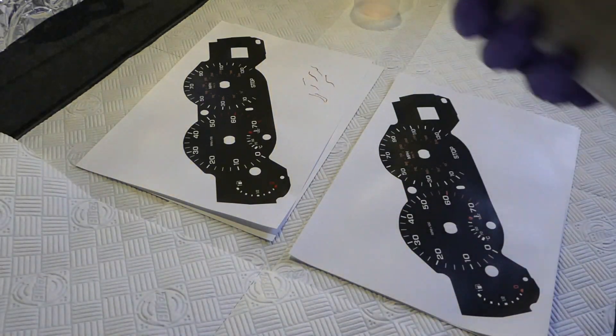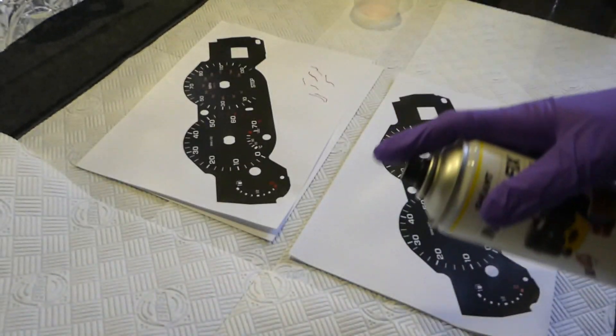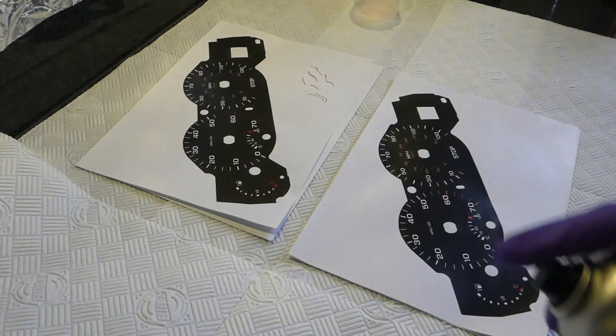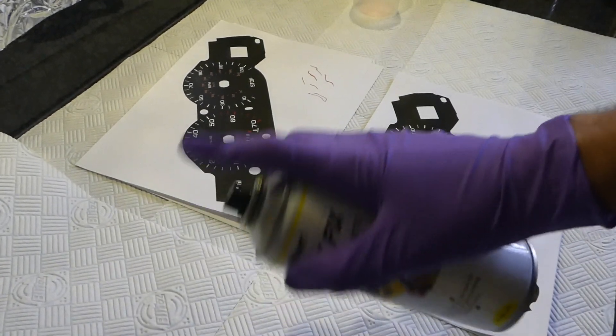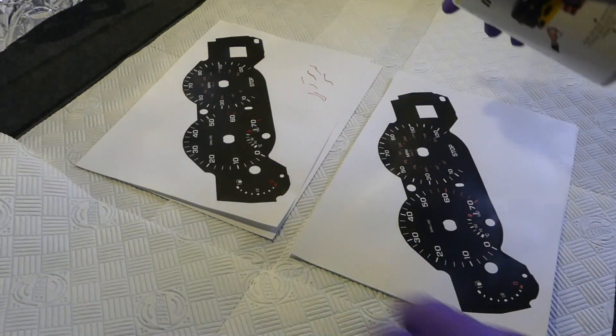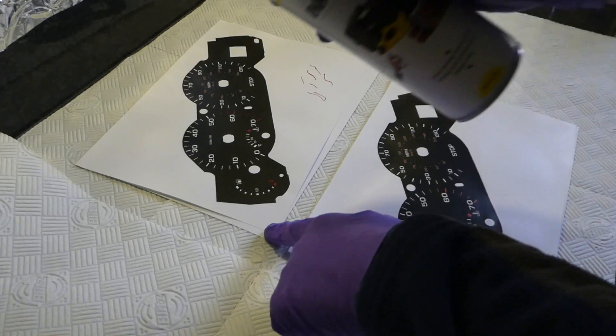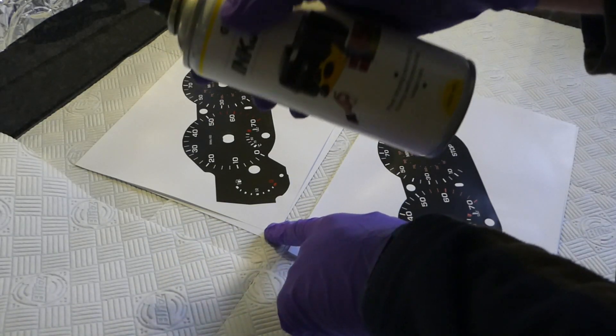Otherwise it becomes shiny rather than matte. And of course spray it somewhere on a kitchen tissue. So I've put some kitchen tissue around. So it just absorbs a bit of the varnish. So spray it somewhere outside to clear the nozzle. And then it's a quick pass. Not too much. Otherwise it becomes shiny rather than matte.